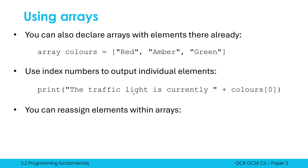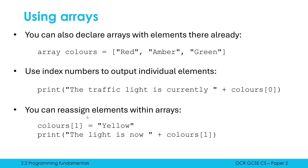We are perfectly able to reassign elements within arrays — changing a value from one thing to another — because arrays are fixed in length, not fixed in terms of their contents. We cannot go beyond our initial length: if colors has three elements, I can't add a fourth — that's where lists differ from arrays. But what we can do is change values within the array. If I want to change amber to yellow, I reassign colors[1] — the index where amber is — to yellow. Now if I print the light is colors[1], this will print out yellow, not amber, because yellow replaced amber when I reassigned it.